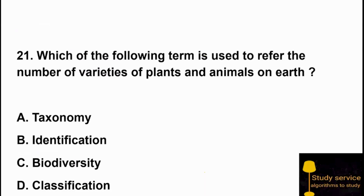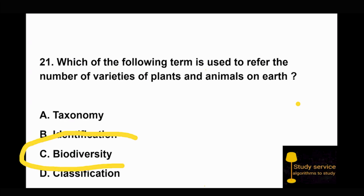Question 21: Which of the following terms is used to refer to the number of varieties of plants and animals on earth? Option B: identification. Option C: biodiversity. Option D: classification. Biodiversity is the right answer — it refers to the variety of plants and animals on earth.